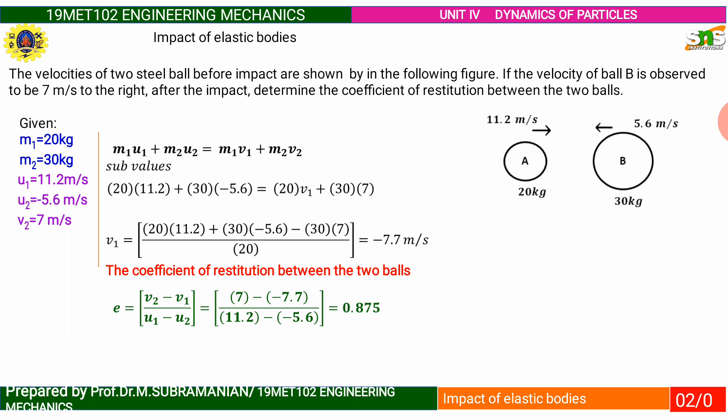From that we substitute all the values. Masses of two balls are given 20 and 30 kg. Then initial velocity and the final velocity, only one unknown that is V1. From that we can calculate the final velocity of ball A, that is minus 7.7 meters per second.